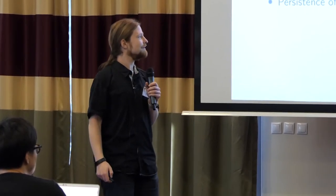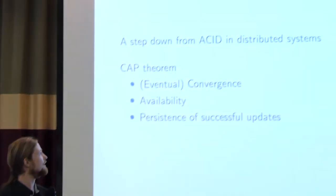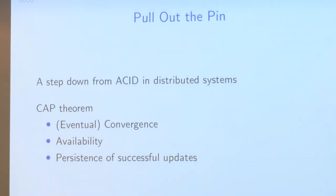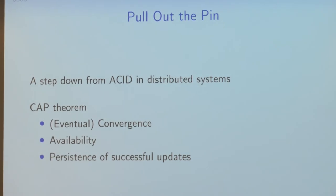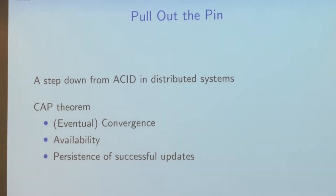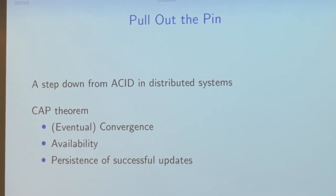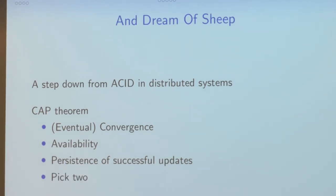ACID is not something you can provide in a distributed environment. A helpful thing that describes what you can actually do is the CAP theorem. You can provide convergence to make sure that all of your replicas will eventually, if you stop making changes, agree on the final state. Availability means that if you can contact one of the replicas, you will be able to make changes. And persistence means that if something is accepted, it will be reflected in the final state. The CAP theorem says you can only pick two.